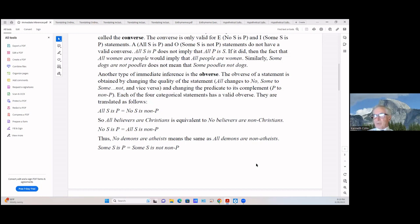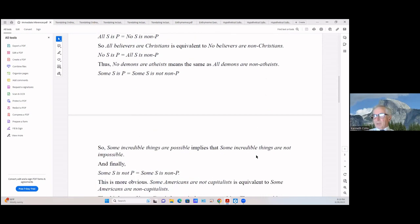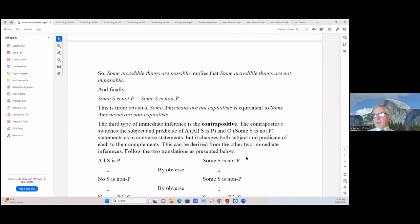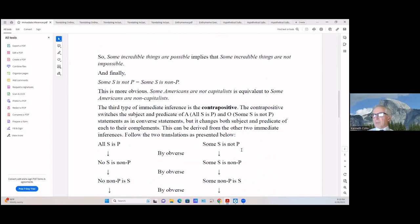No demons are atheist means the same thing as all demons are non-atheist. So some S is P and some S is not non-P. Some incredible things are possible implies that some incredible things are not impossible—it's just the obverse. And finally, some S is not P equals some S is non-P, and that's of course more obvious. Some Americans are not capitalist is equivalent to some Americans are non-capitalist, and I'm not going to say anything like they can be democrats, I wouldn't say that.